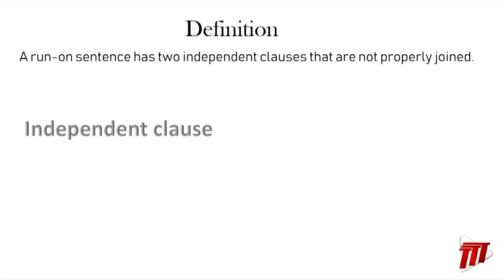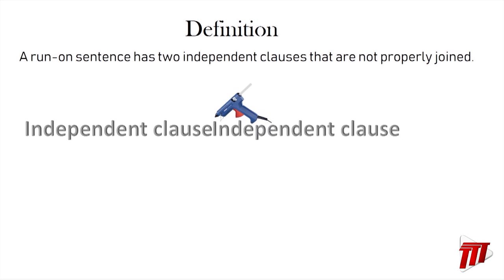So let's talk about what a run-on sentence is. A run-on sentence is a sentence that has two independent clauses, but there's a problem. The problem is that these two independent clauses are not joined properly. It's as if you have an independent clause and then you glue on another independent clause and smush them together — that's a run-on sentence.